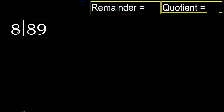89 divided by 8. 8 is not less, therefore work with 8. 8 multiplied by which number is nearest to 8 but not greater? 8 multiplied by 2 is 16 — 16 is greater. Multiply by 1 is 8. 8 is not greater.